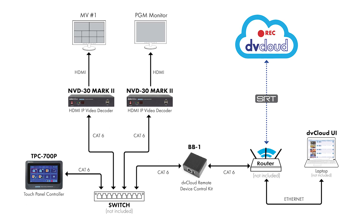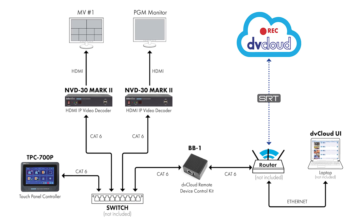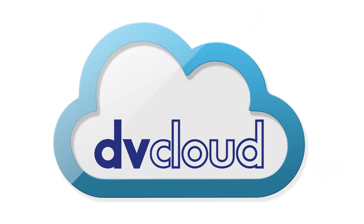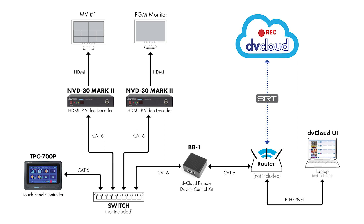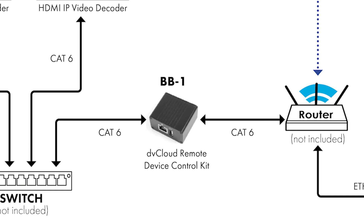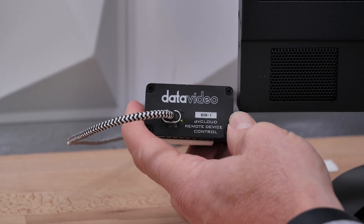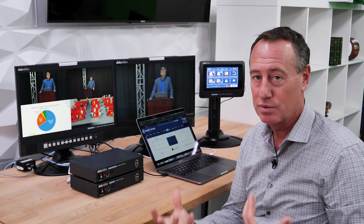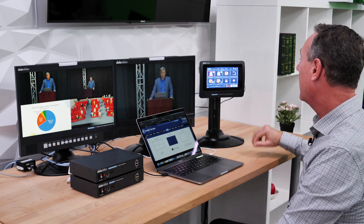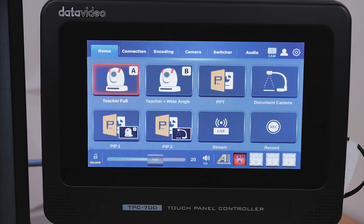There are really four key Datavideo products that make this entire remote production workflow work. The first is DV cloud — it's a cloud subscription service that allows you to connect the remote site and the venue site, along with all the equipment, to do remote production in the cloud. The second item — Craig has one at the venue site and I have one at the remote side — is a little box called the BB1. By connecting securely through the cloud, it creates a secure network so I can see those remote devices as if I'm sitting in the same room.